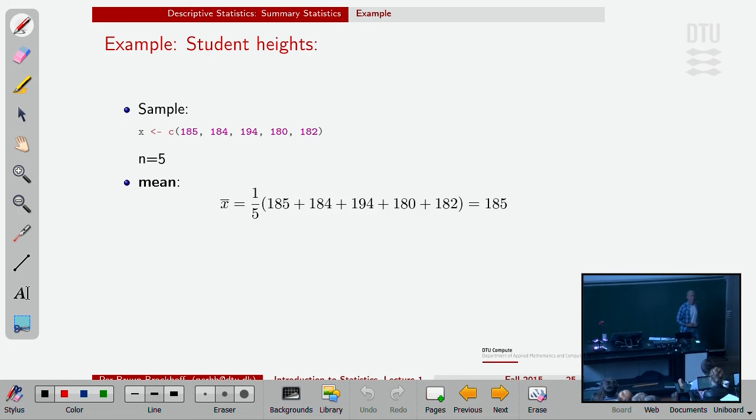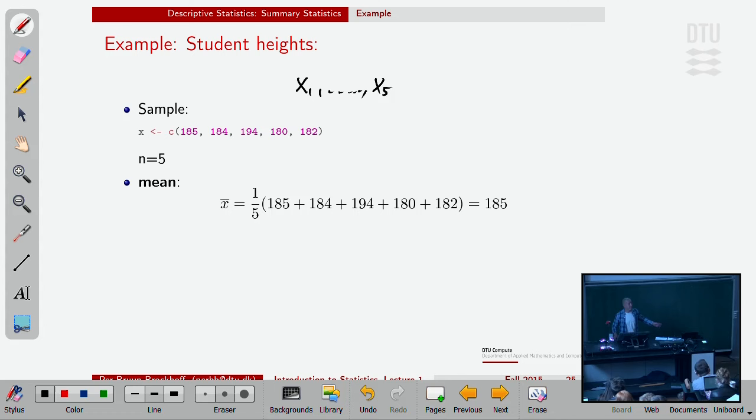The mean is, as the summation sign indicates, x1 up to, you could say in this case, I would have x1 up to x5, the five numbers. I add them up. I divide by five. The mean height is 185 centimeters. Third grade, fourth grade material.